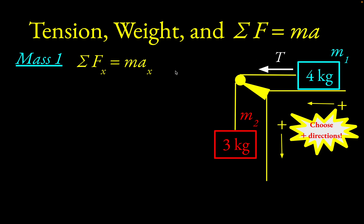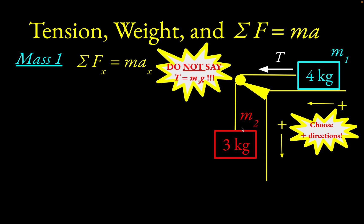Here's a huge pitfall. What students will sometimes do is say that it's really just the weight of the three kilogram mass pulling down that makes the four kilogram mass move to the left — making the mistake of saying that the force accelerating the four kilogram mass is the weight of mass two. That's not true. The force that acts on the four kilogram mass is the tension in the rope directly connected to it. So do not say that the tension equals the weight of the three kilogram block. Applying F equals MA correctly to mass one: tension is the force, so T equals M1A.